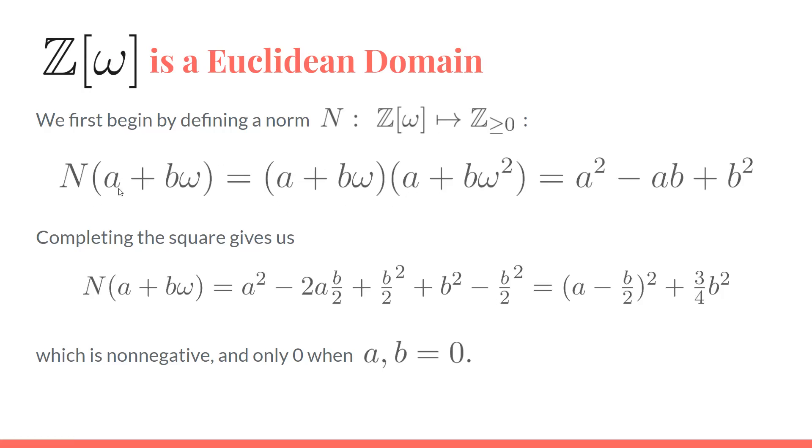We want a norm that sends everything to a positive integer and only sends zero to zero. So we'll do this by multiplying an Eisenstein integer by its conjugate. We'll do (a + bω)(a + bω²), and that ends up giving us a² - ab + b². This is definitely an integer.